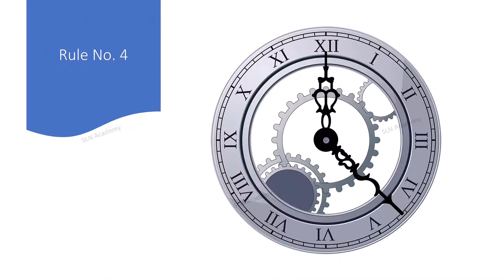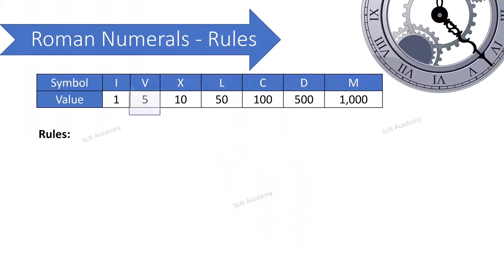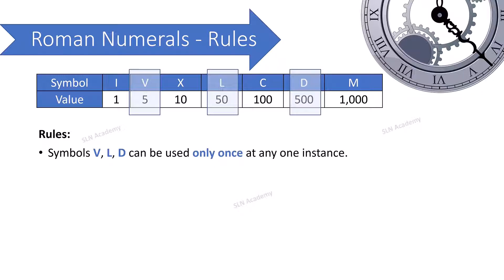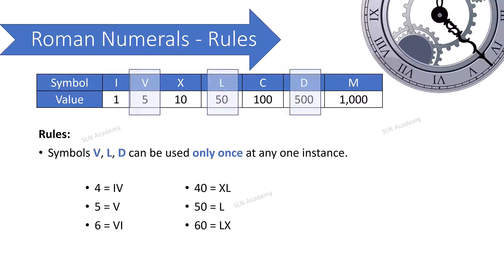Rule number four: The symbols V, L, and D can be used only once at any one instance. For example, in numbers like 4, 5, and 6 where V is used, symbol V appears only once. Symbol L is used only once in 40, 50, and 60. Symbol D is used only once in 400, 500, and 600.